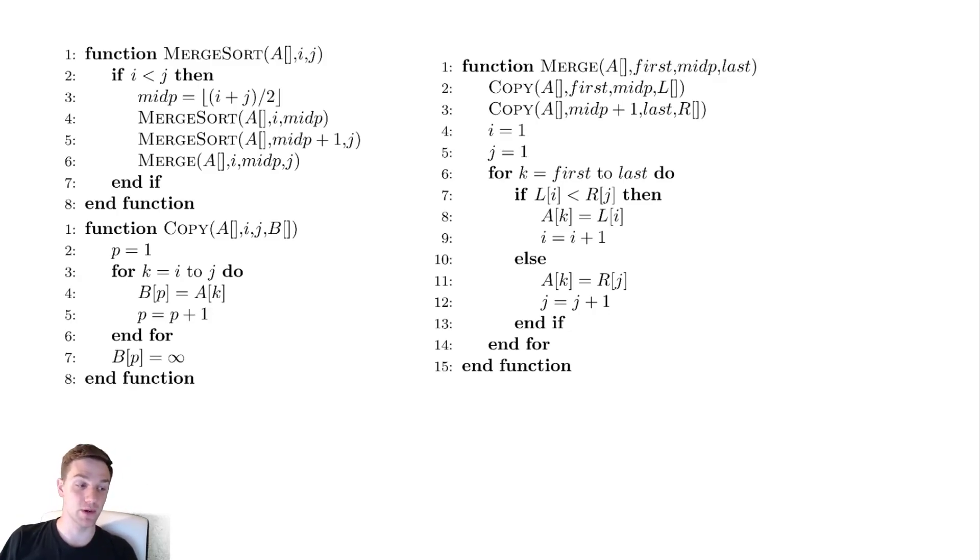What we're going to do is we're going to take some array and a range of values in that array and we're going to split that range in half, sort one half of them, sort the other half of them, and then merge those two sorted halves together.